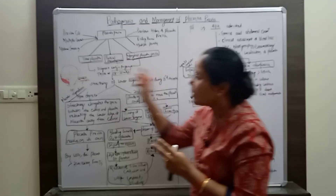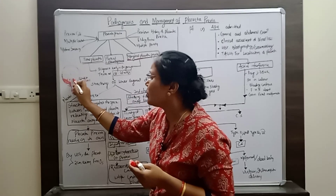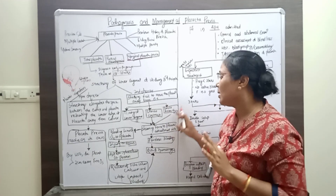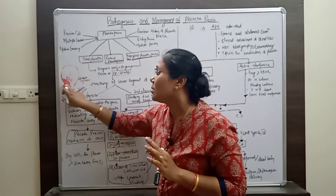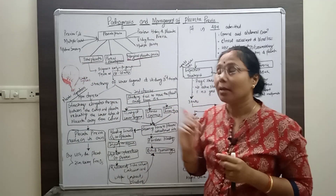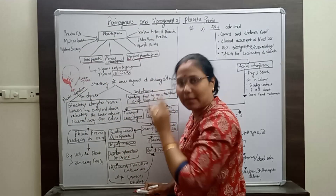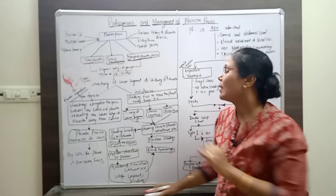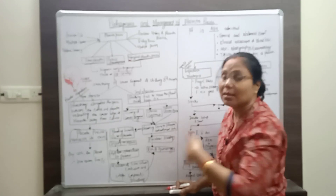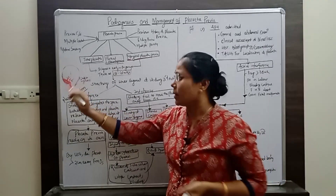These three factors — thinning of the lower uterine segment, uterine contractions, and cervical thinning or effacement — together create a shearing force on the placental implantation site. Due to these three factors, a shearing force is applied to where the placenta is implanted, causing detachment of the placenta. Due to this detachment, bleeding takes place. This is the pathogenesis: why bleeding occurs in placenta previa — it is painless, sudden bleeding.